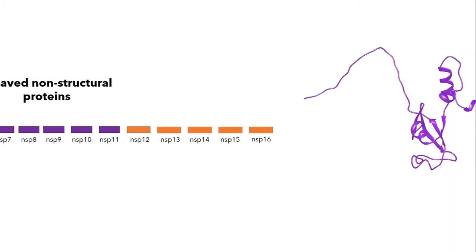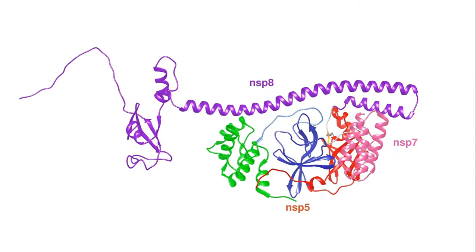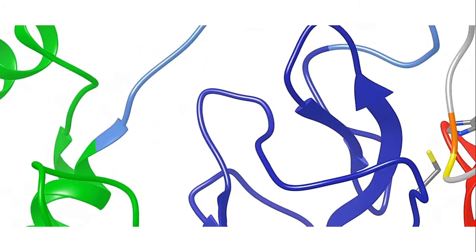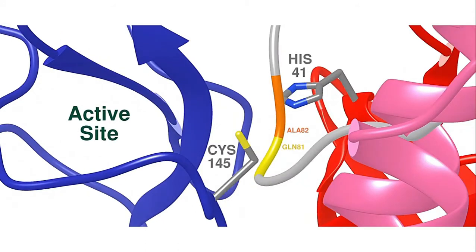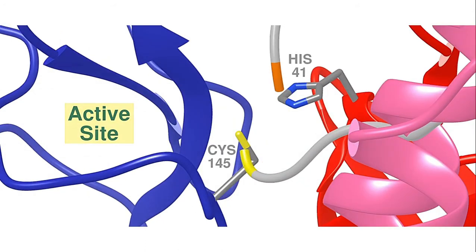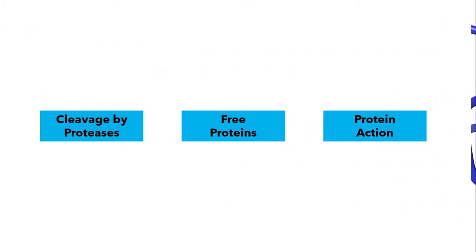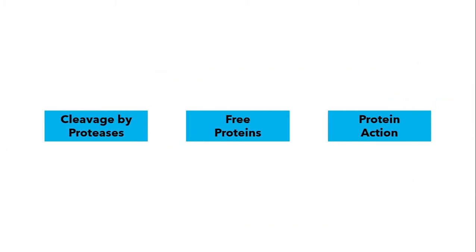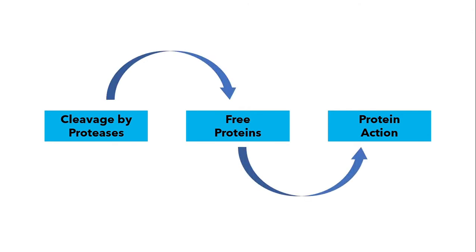As an example, you see here how the main protease cleaves off a bond between NSP7 and NSP8 with its active site. This cleavage is what produces free proteins, which then carry out viral function.